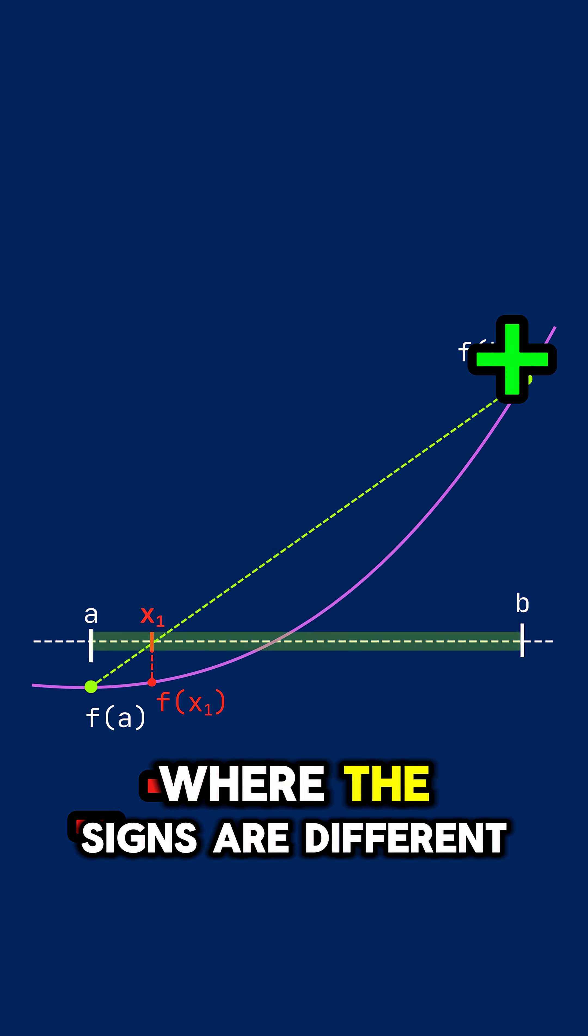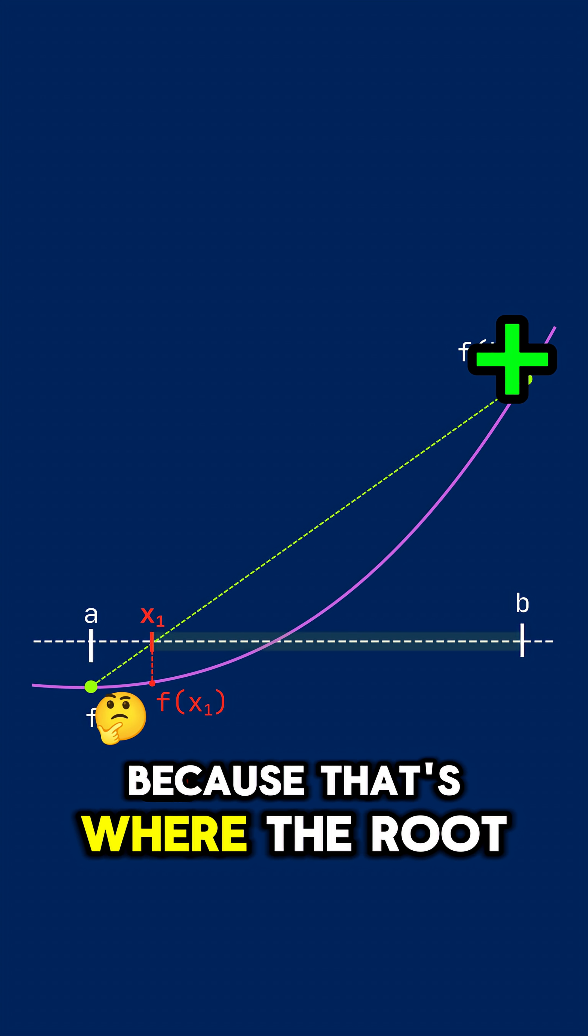The rule is simple. We keep the side where the signs are different because that's where the root still hides.